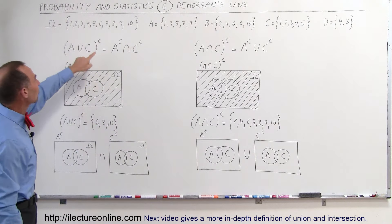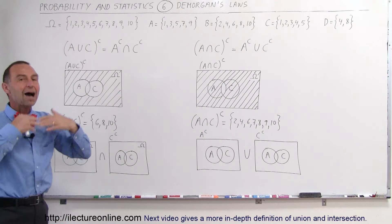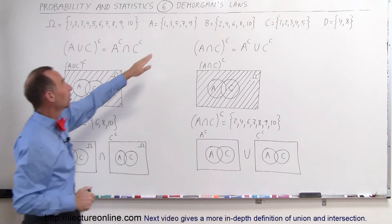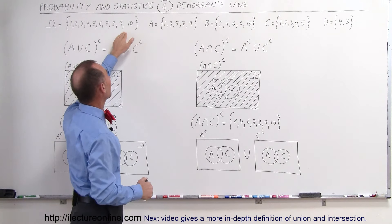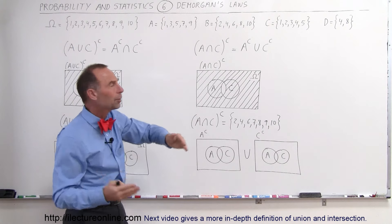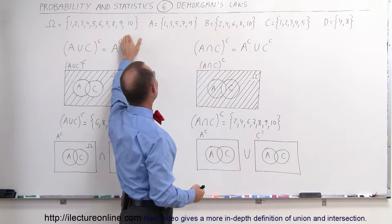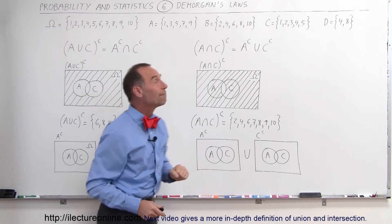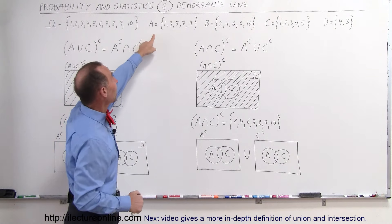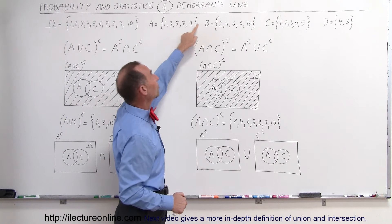Now we have another symbol here which means complement. That means everything outside that belongs in there. For example, the complement of A would be all the elements in the sample space that do not belong to A. And the complement of B is all the elements in the sample space that do not belong to B. And if you look carefully, you can see that the complement of A is actually B, and the complement of B is actually A.